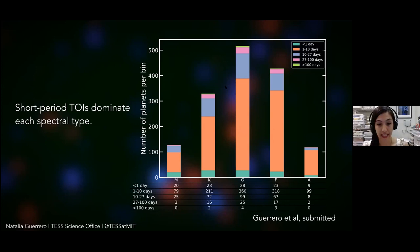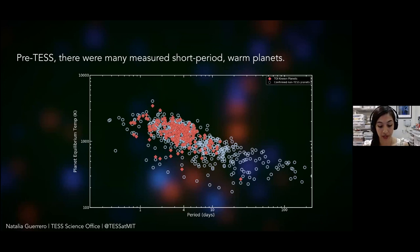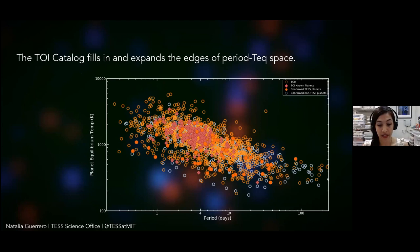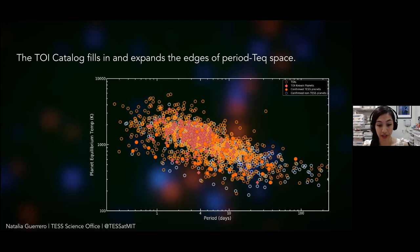As we go back and look at the data again, we'll find more long-period planets. This is exciting because, for short-period planets, looking at period on the x-axis and equilibrium temperature on the y-axis, we can see that before TESS we had measured a lot of short-period warm planets. Plotting the TOIs on top of known planets — both those reobserved by TESS and confirmed planets from other surveys — we can see that the catalog is filling in a lot of space above and below what we already knew about. This is exciting for those looking to explore additional temperature and period regimes.